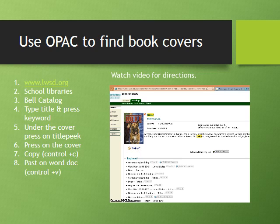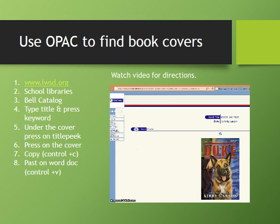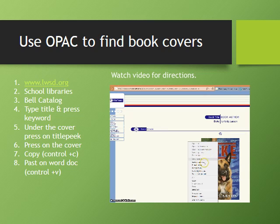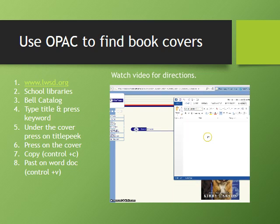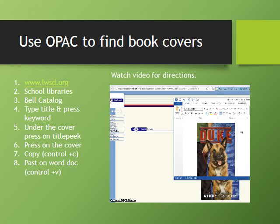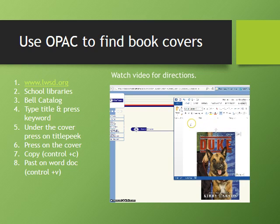Right here it says Title Peek. I'm going to click on Title Peek, and when I do that, it opens up a new screen. Now I can see a larger picture of Duke and the cover. This is what I want to save. So I'm going to right-click, copy, and then go to my Word document and Ctrl+V to paste it. Now Duke is on my Word document, and I can save that.